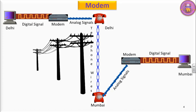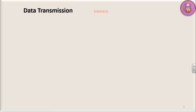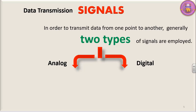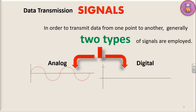Now let's look into the detail of this modem — data transmission signals. We know that there are two types of signals. We have seen digital signals and analog signals. In order to transmit data from one point to another, generally two types of signals are employed: one is analog signal and the second one is digital signals. Analog signals are in the form of waves, whereas digital signals are in the form of 0s and 1s.